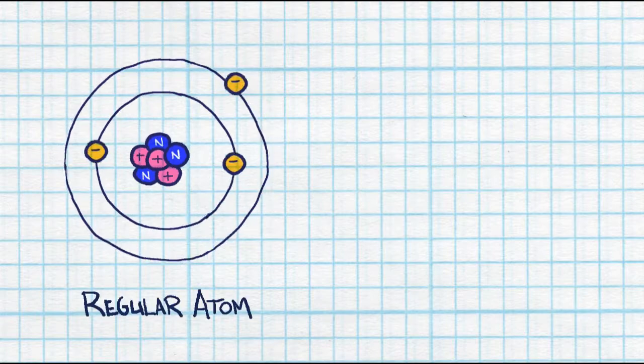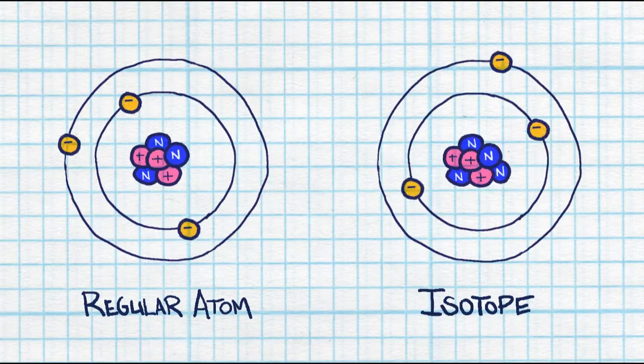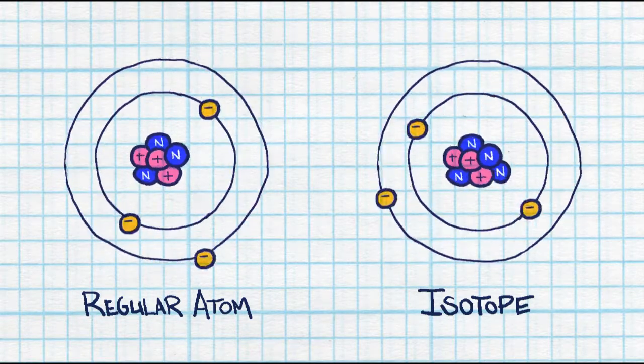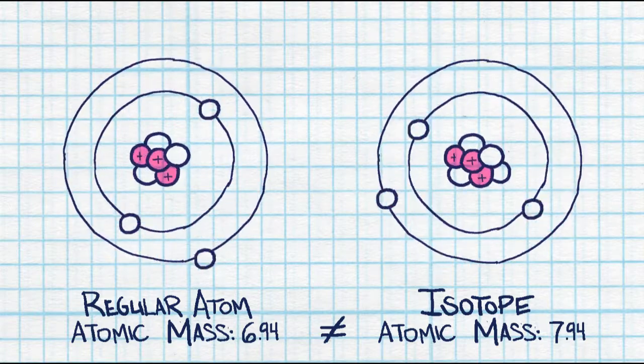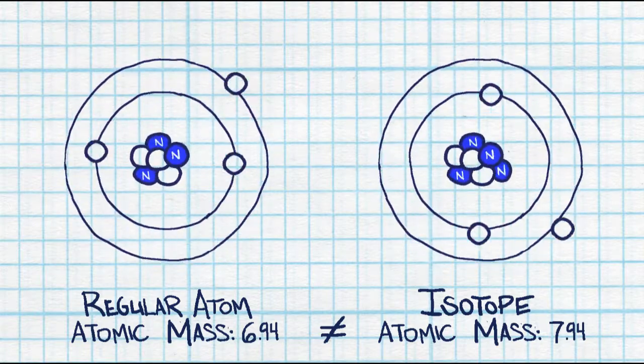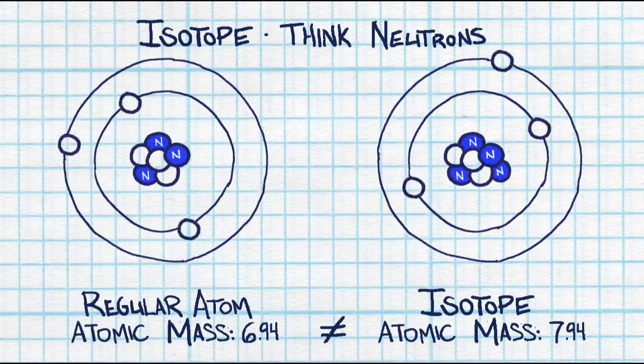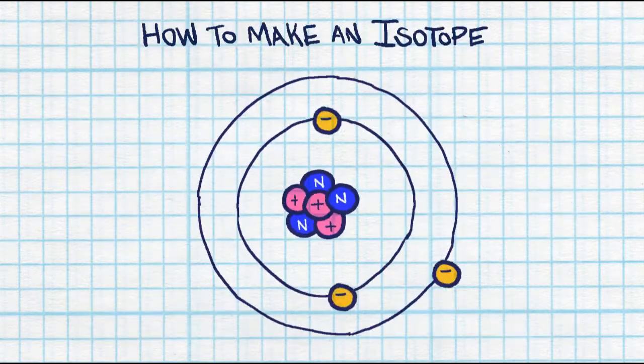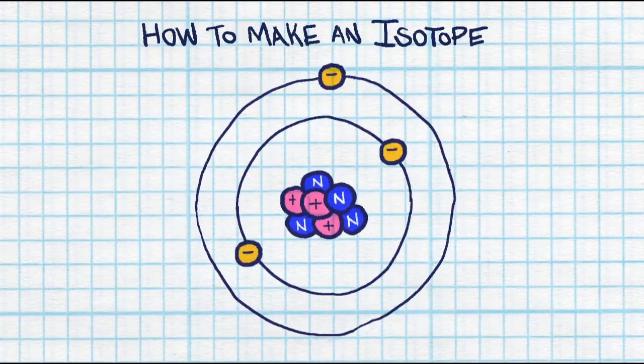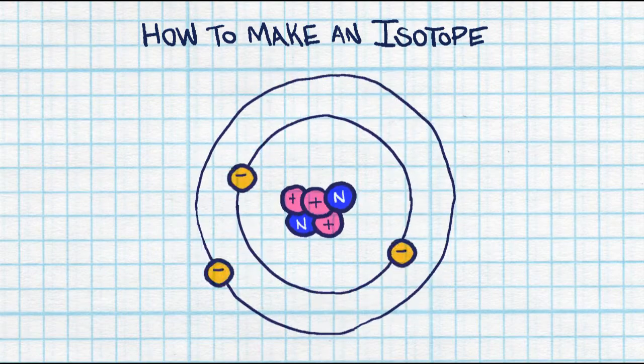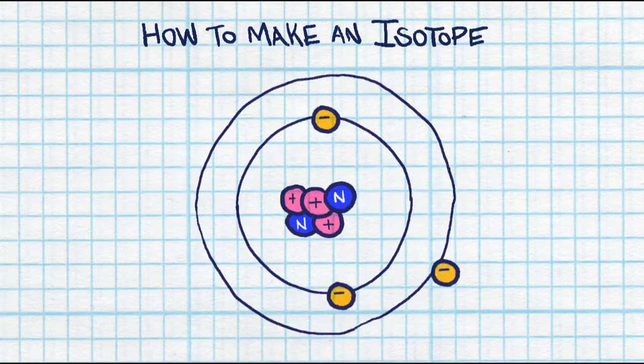When you're looking at atoms, you can actually make an atom into an isotope, which means that it has a different atomic mass, or the number of protons does not equal the number of neutrons. So when you think isotope, think neutrons. If you're asked to make an isotope, you're either going to be adding extra neutrons or taking away neutrons, so that the number of neutrons does not equal the number of protons.